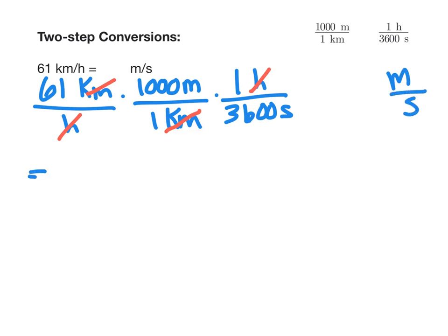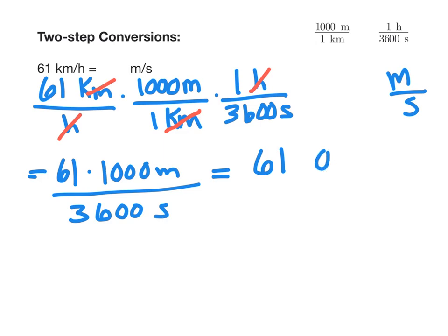Simplifying this, we write 61 times 1,000 meters on top, divided by 3,600 seconds. That simplifies to 61,000 meters over 3,600 seconds, and we can then write our final answer.